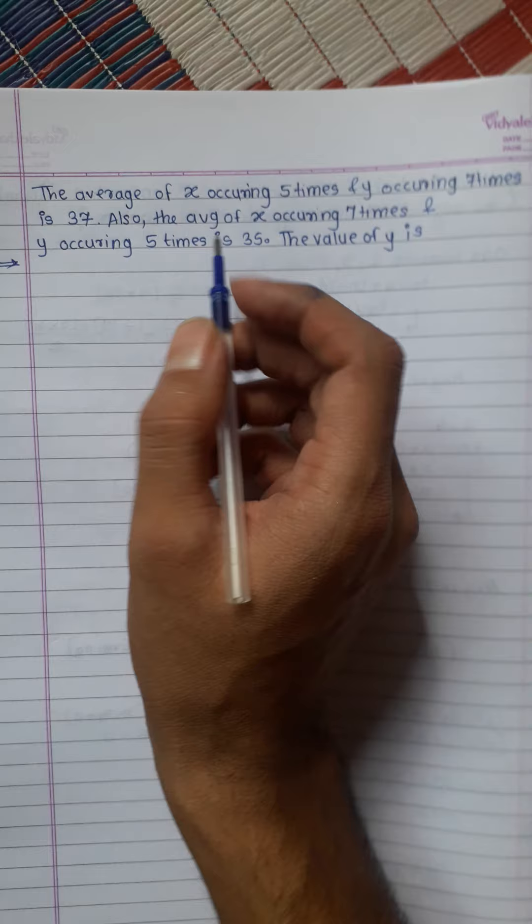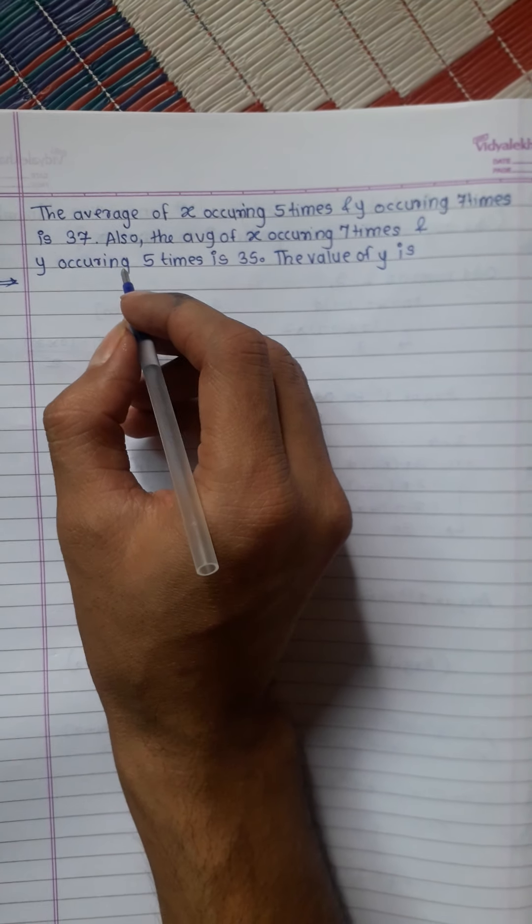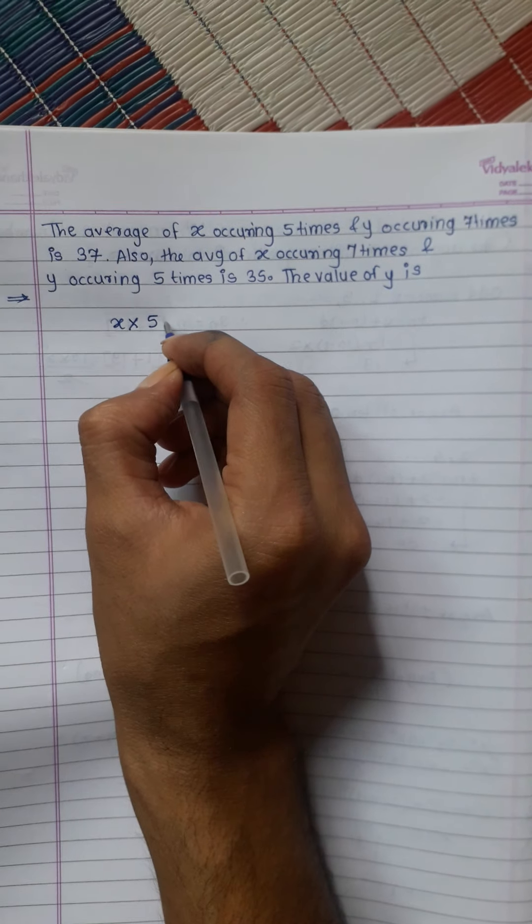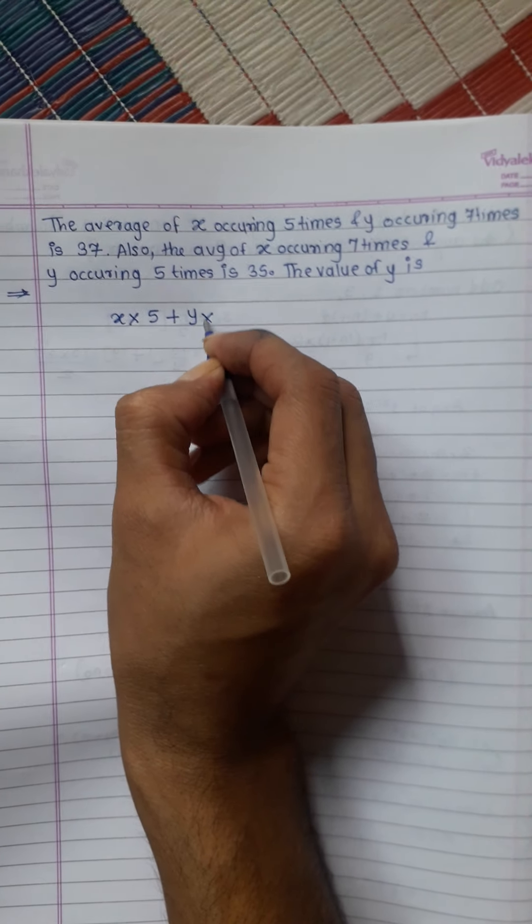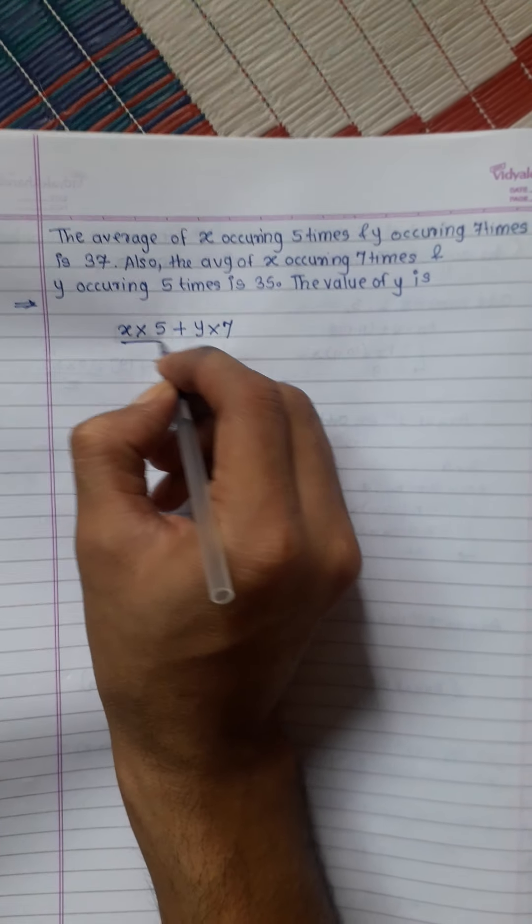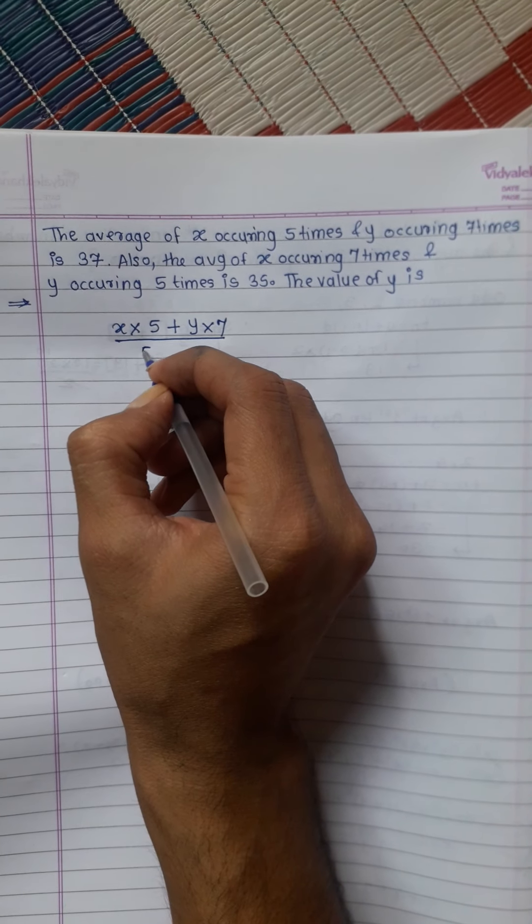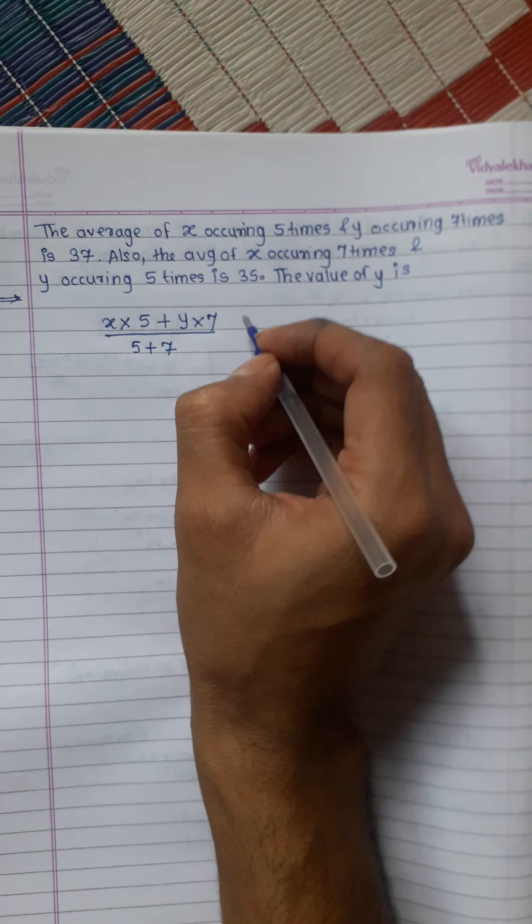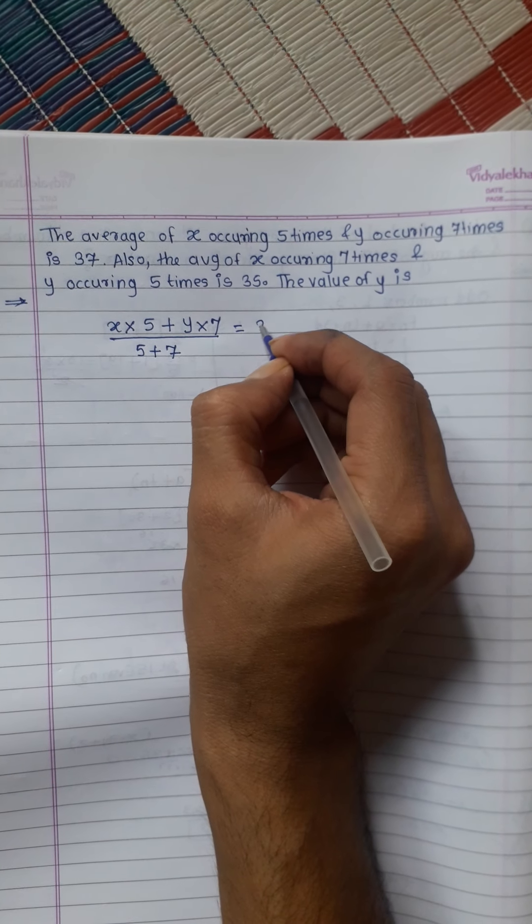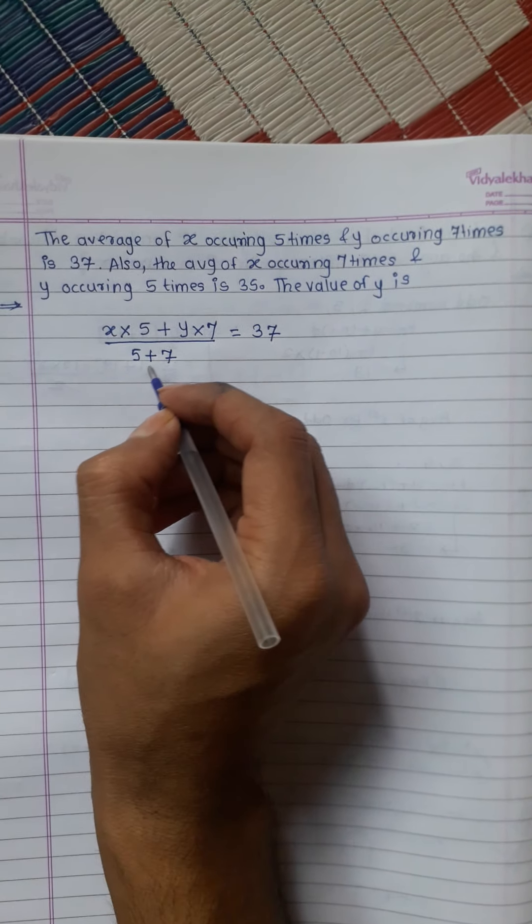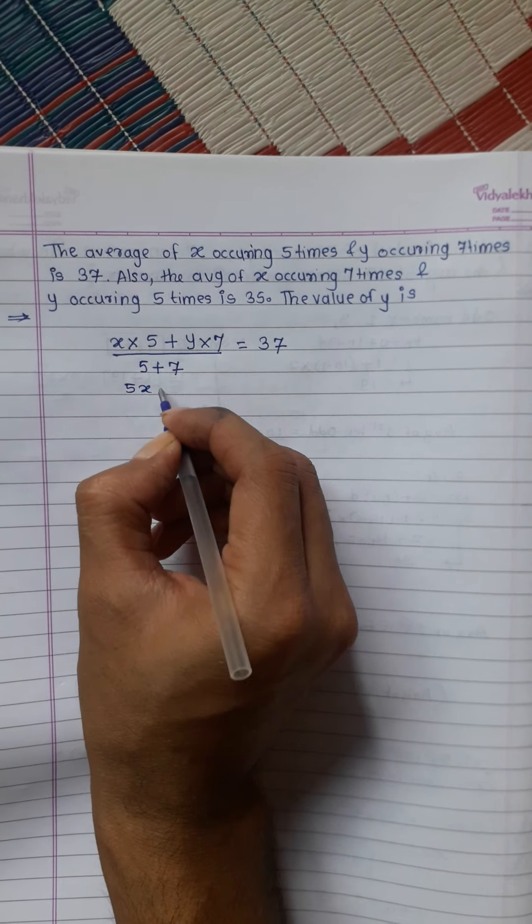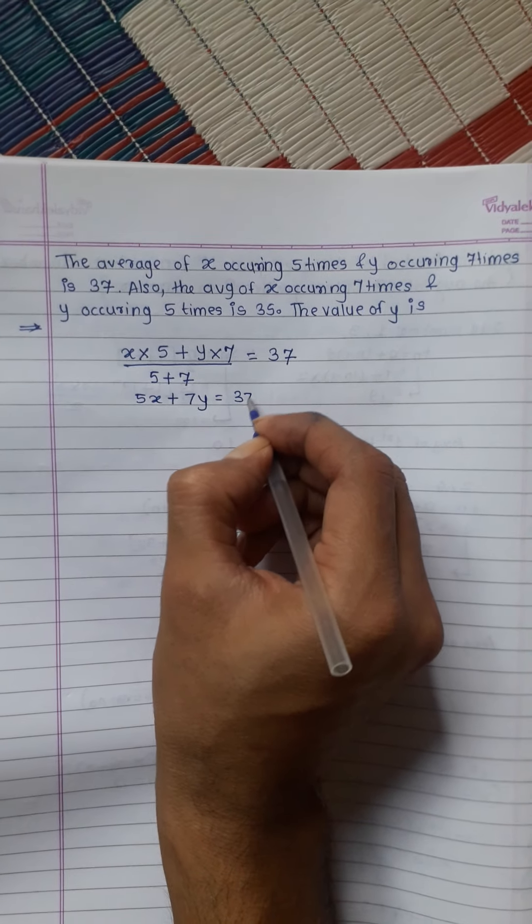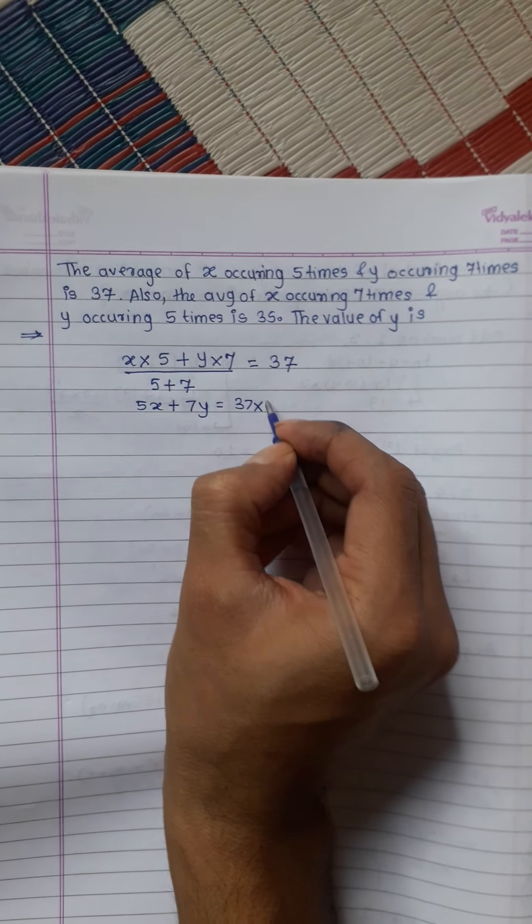The value of y is what we need to find. Here, x is occurring 5 times plus y is occurring 7 times. So 5x plus 7y divided by 5 plus 7, which is 12, equals 37. Therefore, 5x plus 7y equals 37 multiplied by 12.